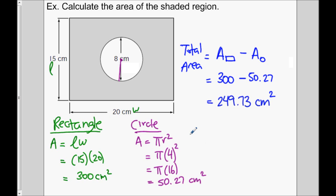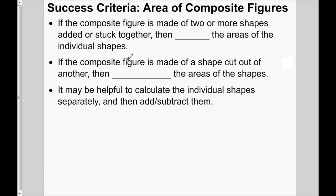So you've just seen two different types of composite figures. If the composite figure is made up of two or more shapes added or stuck together, like in the first example, then we add the areas of the individual shapes. In the second example, if a composite figure is made up of a shape cut out of another, then we subtract the areas. It may be helpful to calculate the individual shapes separately and then add or subtract them.